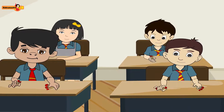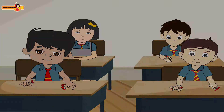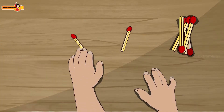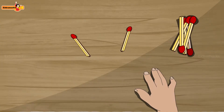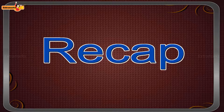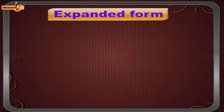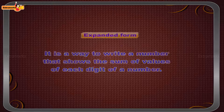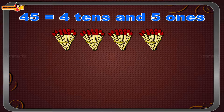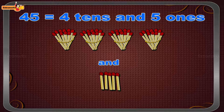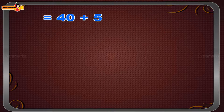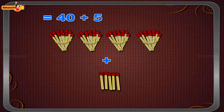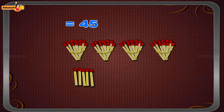The children went on to arranging the bundles according to the numbers written on the board. Recap: Expanded form is a way to write a number that shows the sum of values of each digit of a number. Forty-five is equal to four tens and five ones, which is equal to forty plus five, which is equal to forty-five.